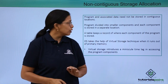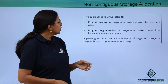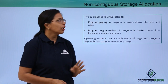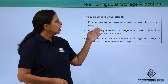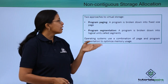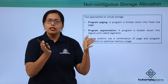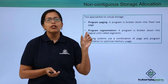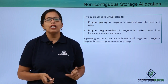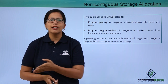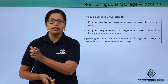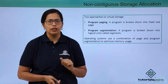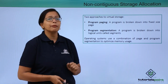Now, how is this breaking down done? It is done in two ways: program paging and program segmentation. In program paging, a program is broken down into fixed-size pages. For example, if the operating system has decided on a page length of 8 bytes, it will divide the program into 8-byte chunks, and each 8-byte chunk will be stored in one location.